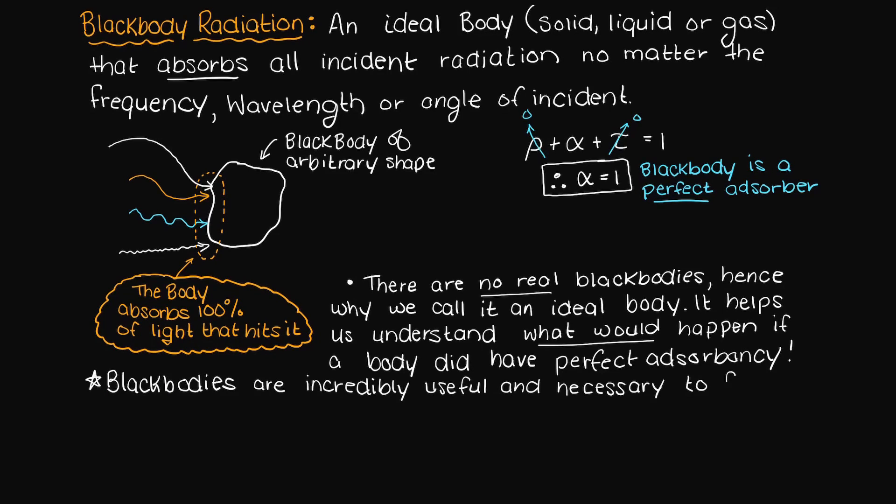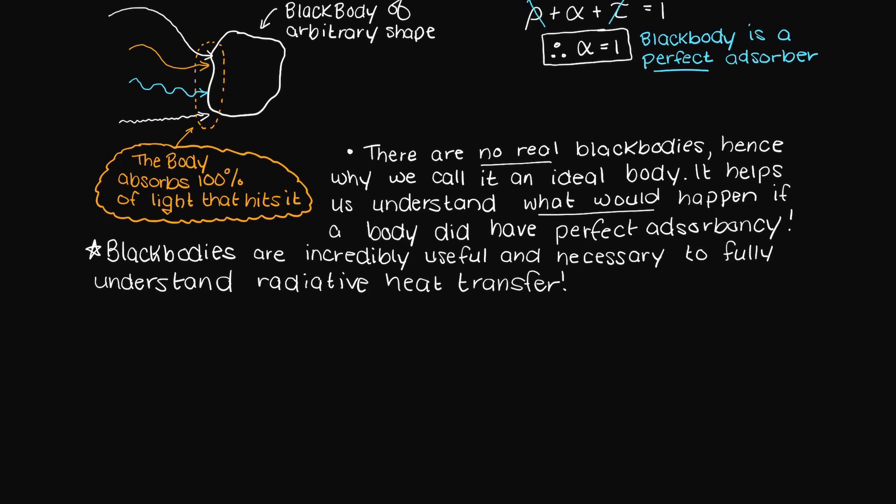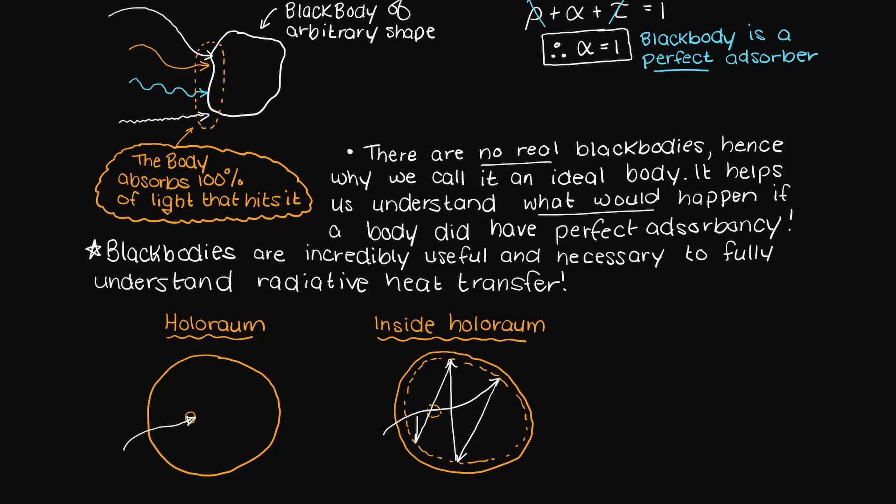Blackbodies are extremely useful to the study of radiative heat transfer. One device that can be used to simulate a real blackbody is a hollow room, which is essentially a small sphere with a small opening. A ray of radiant energy is projected in, and upon every reflection, a certain amount of energy is absorbed into the walls. This way, the walls within the sphere will absorb almost 100% of the radiant energy that is projected into it.